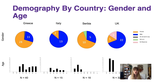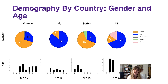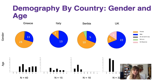When we look at the different countries individually, first let's look at Greece in terms of gender and age profiles. In terms of gender, we can see that we've got 28 individuals out of 40 that were female and 11 that were male, and one individual did not want to say their gender. In terms of age, we've got quite a broad range of students from 18 to 21 to 41 plus, fairly evenly distributed across these age categories.